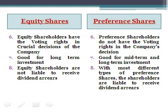Equity shareholders have the voting right in crucial decisions of the company. On the other hand, preference shareholders do not have the voting right in company decisions — preference shareholder वोट नहीं करते हैं company decisions में, जबकि equity shareholder को voting right है।